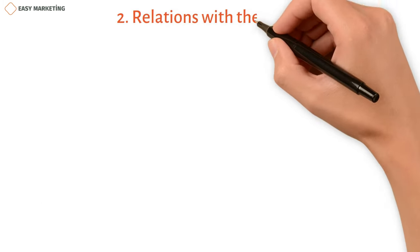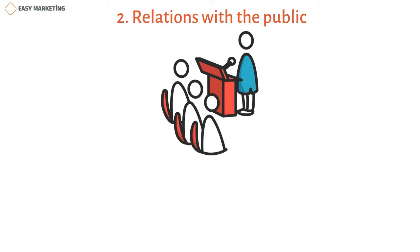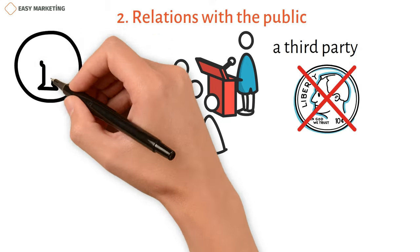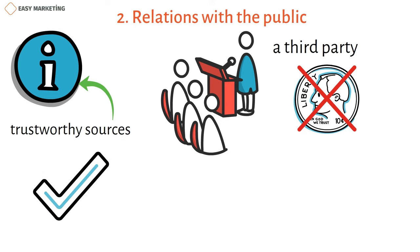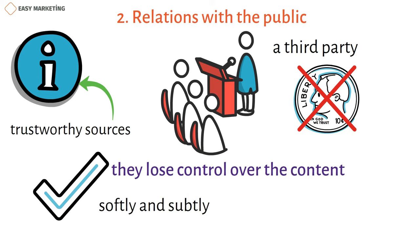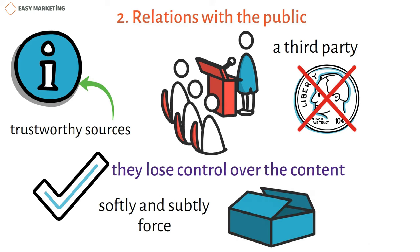Number two: public relations. Public relations is one of the most reliable ways to market something, because it comes from a third party instead of the company itself. The public is kept up to date without spending much. This works well because the information comes from trustworthy sources rather than those paid by the business. However, companies lose control over the content. Public relations softly promotes the products, while advertising uses force to sell them. Choose this type if your product is real and you have something valuable to offer.